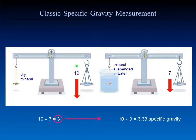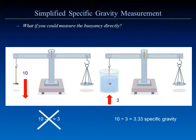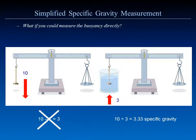We had a measurement of 10 dry and 7 wet — where did the difference of 3 go? The 3 is found in the increased weight of the beaker of water. What if we could measure that 3 directly? We measure the mineral dry, get a value of 10, then measure the increased weight of the beaker once the mineral is suspended in it, divide 10 by 3, and get 3.33 — the specific gravity. That is in essence the new methodology being proposed here.